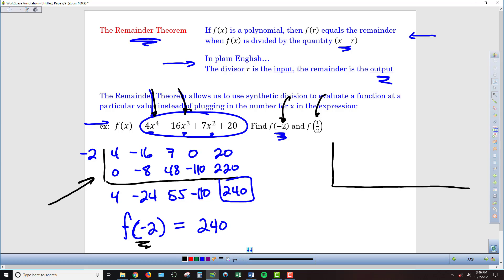Instead, if we set up our synthetic division with 1 half as the number on the outside here, and then we use our coefficients, 4, negative 16, 7, don't forget the 0 placeholder for the x, and 20.